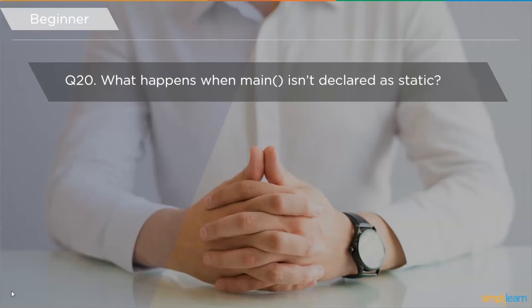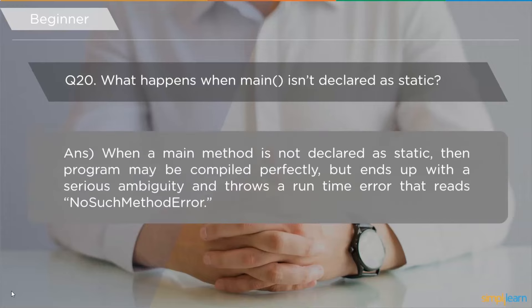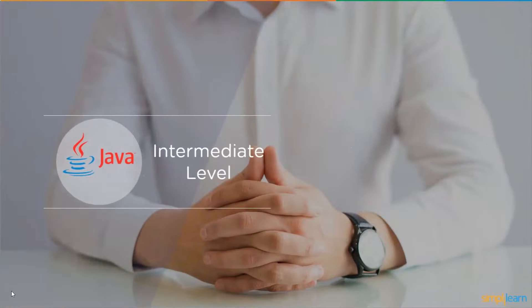The next question is: what happens when the main method is not declared as static? When the main method is not declared as static, the program may compile perfectly but ends up with a serious ambiguity and throws a runtime error saying 'no such method error'. This completes the beginner segment of questions, followed by the intermediate level segment.